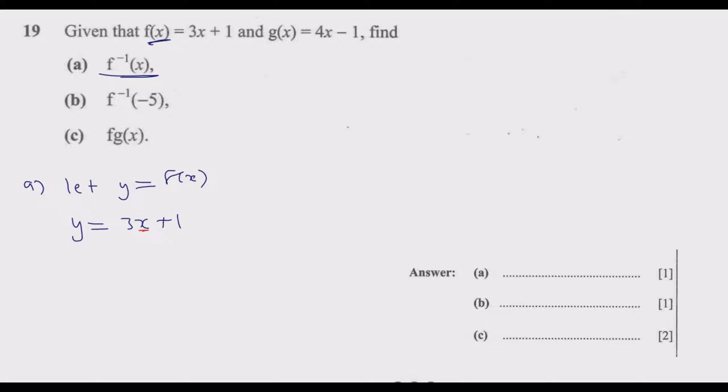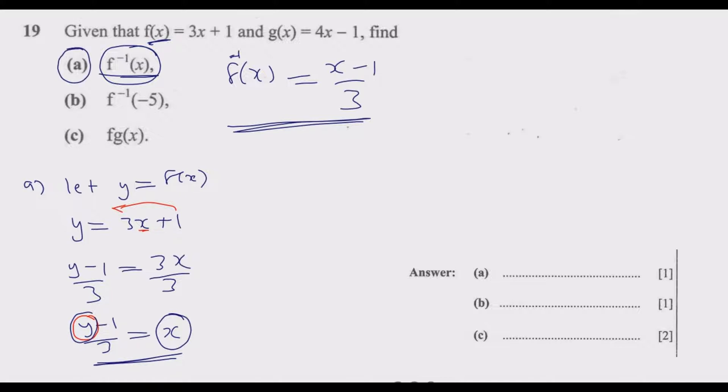When we take this one to the other side it changes sign, so we have y - 1 = 3x. To solve for x we divide by 3, so we have (y - 1)/3 = x. At this point, whenever we have x we replace it with the inverse notation, and whenever we have y we replace it with x. This tells us f⁻¹(x) = (x - 1)/3.